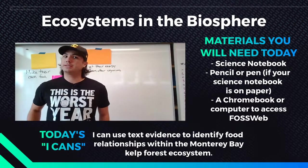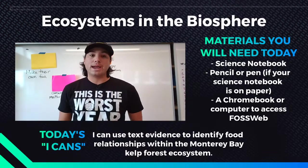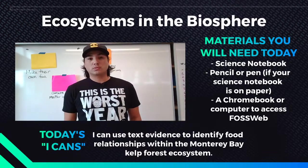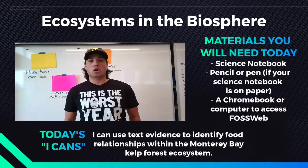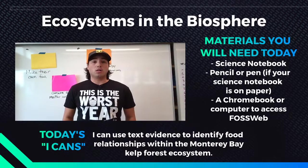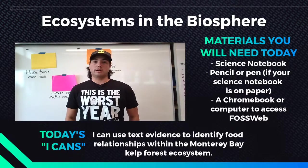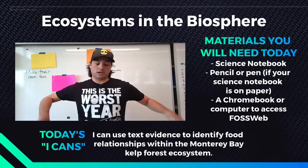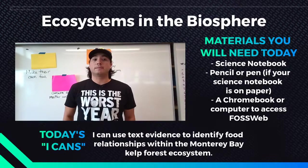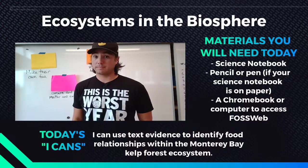Over here, you're going to see the materials you're going to need: a science notebook, a pencil or a pen if your science notebook is on paper, and access to Fossweb so you can get to the interactive card sort for today. If you can't, just follow along with this lesson and afterwards you can work on getting on Fossweb to log in. And then down here we've got the ICANN: I can use text evidence to identify food relationships within the Monterey Bay kelp forest ecosystem.